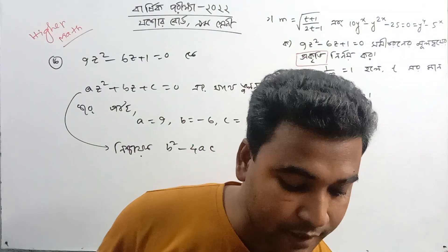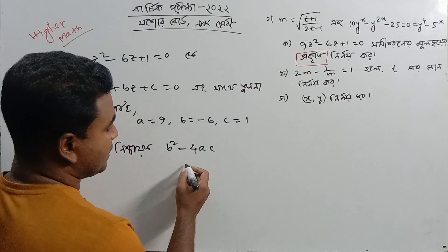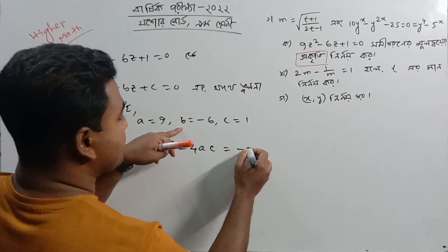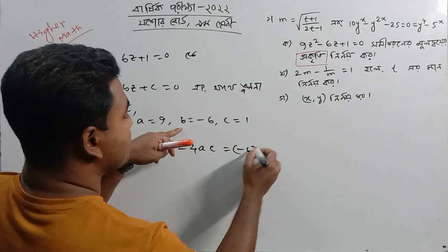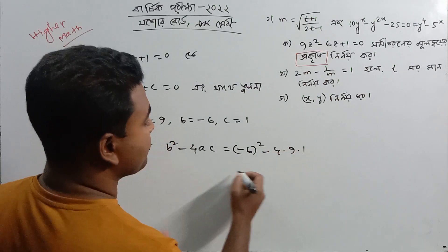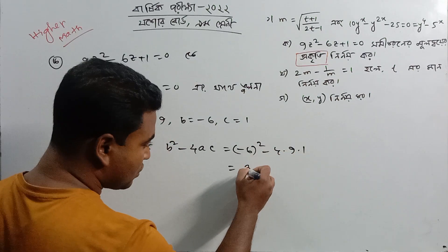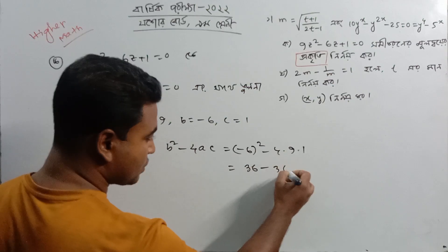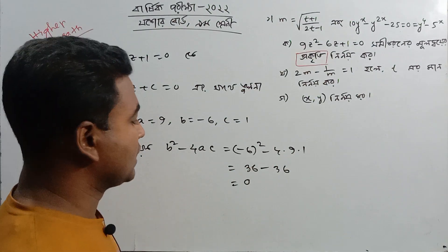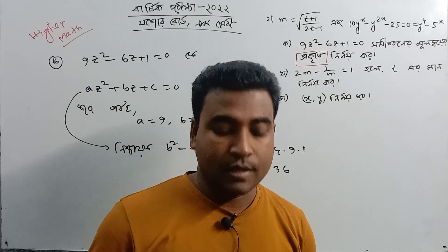We have seen this. 2 squared, that means minus 6 squared minus 4ac — this means 36 minus 4×9 = 0. It is equal to 0 again.